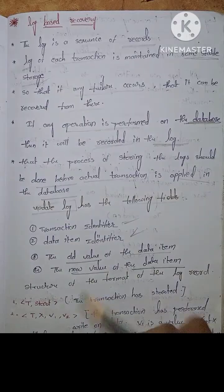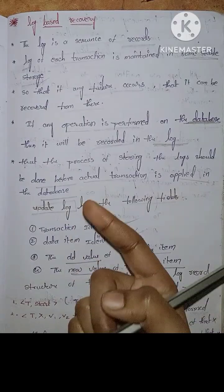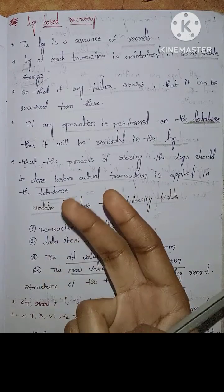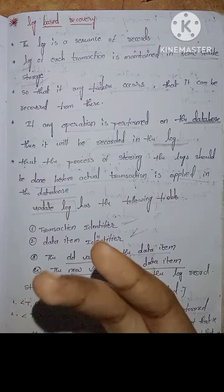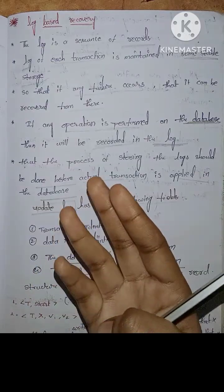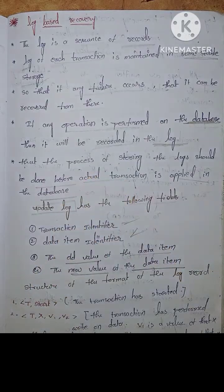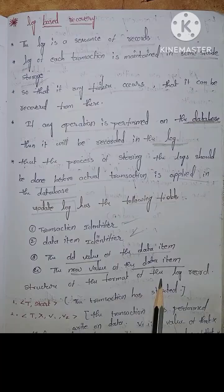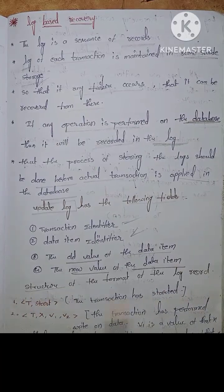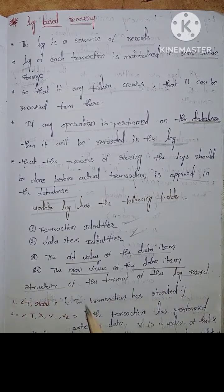To update a log record, we need the following fields: first, transaction identifier; second, data identifier; third, old value of the data item; fourth, new value of the data item. This is the structure and format of the log record.